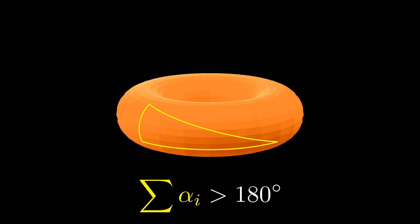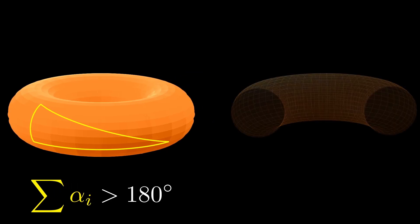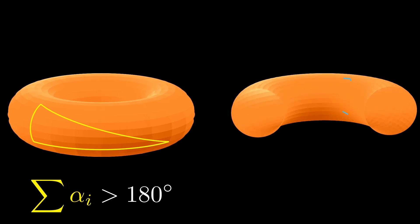But here something interesting happens. If you construct the triangle on the outer side of the torus, the sum is greater than 180 degrees, whereas on the inner side, it is less than 180 degrees.